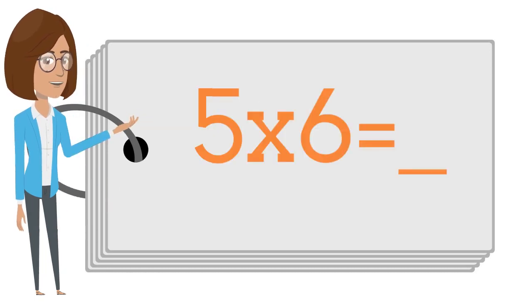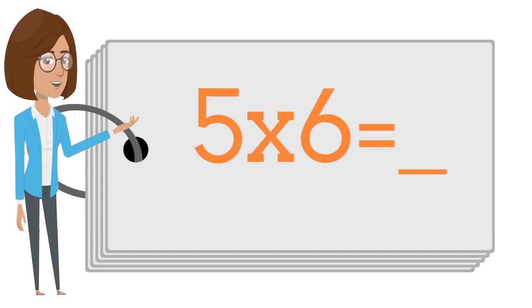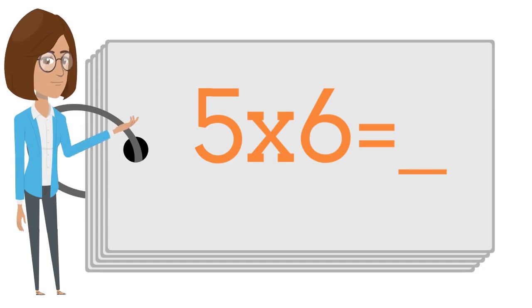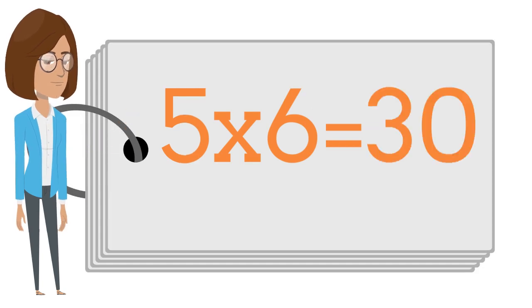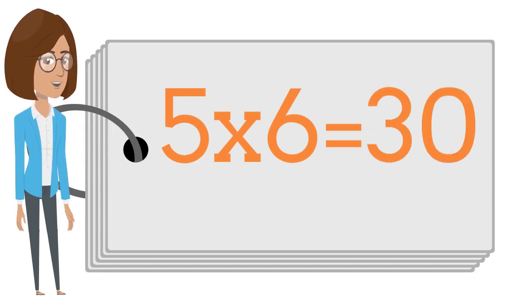Five times six is? Say the answer out loud. Five times six is thirty.